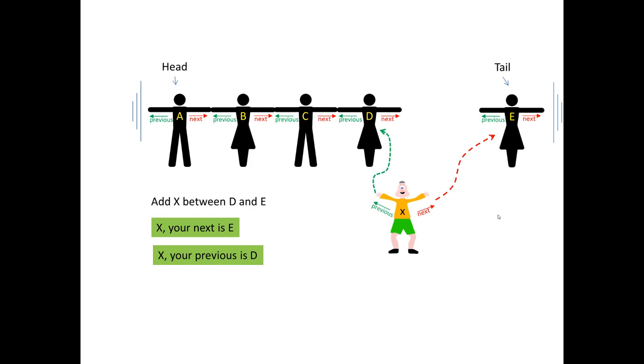But I have to go at the same time to E and to D and ask them to adjust their next and their previous. So for E, I will say, hey, your previous is actually X. OK. And for D, I'll say your next is not E anymore. Your next is X. And I don't have to touch the head or the tail. They already adjusted. And this is fine. X has been inserted.